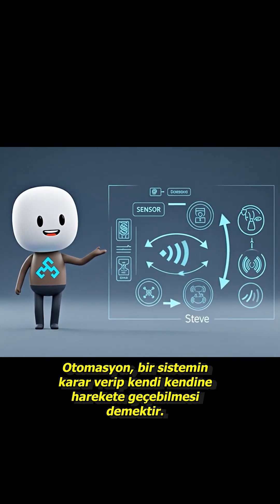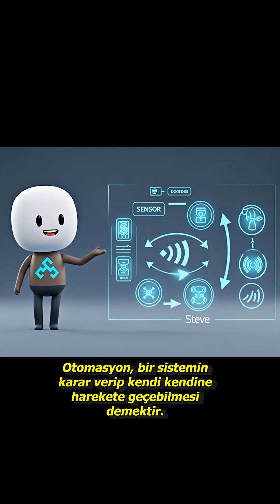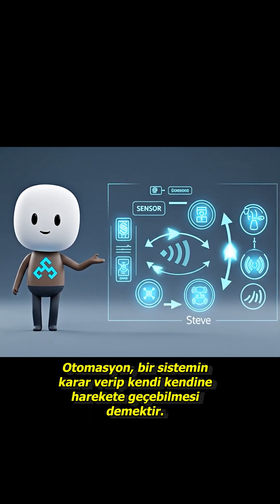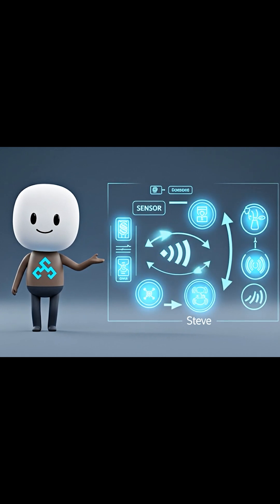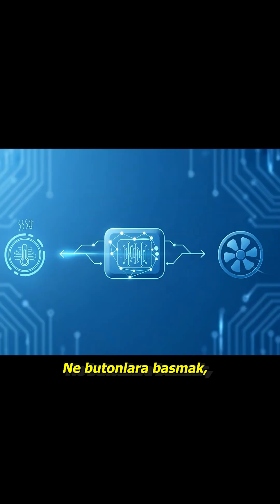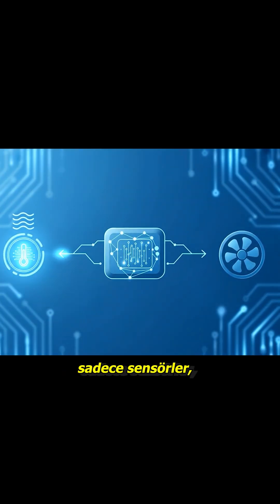Automation means letting a system make decisions and take action on its own — no buttons, no manual control. Just sensors, a controller, and a smart reaction. And the easiest way to understand this is with a temperature-controlled fan.